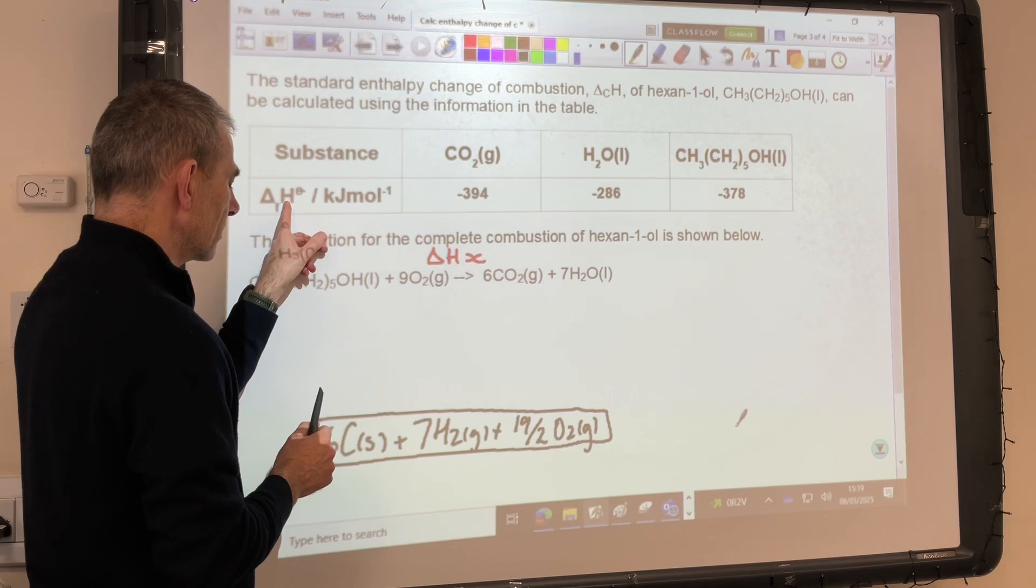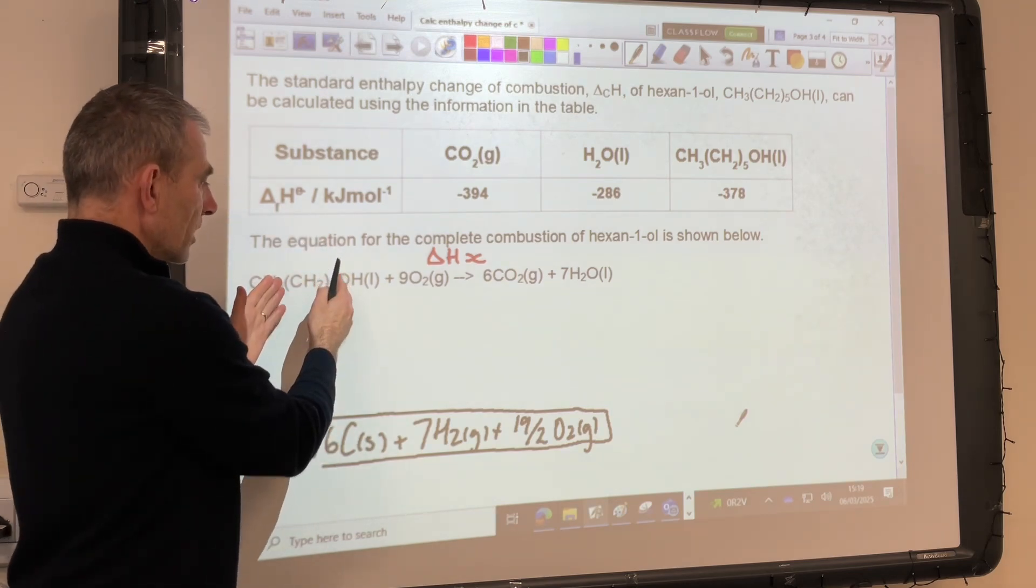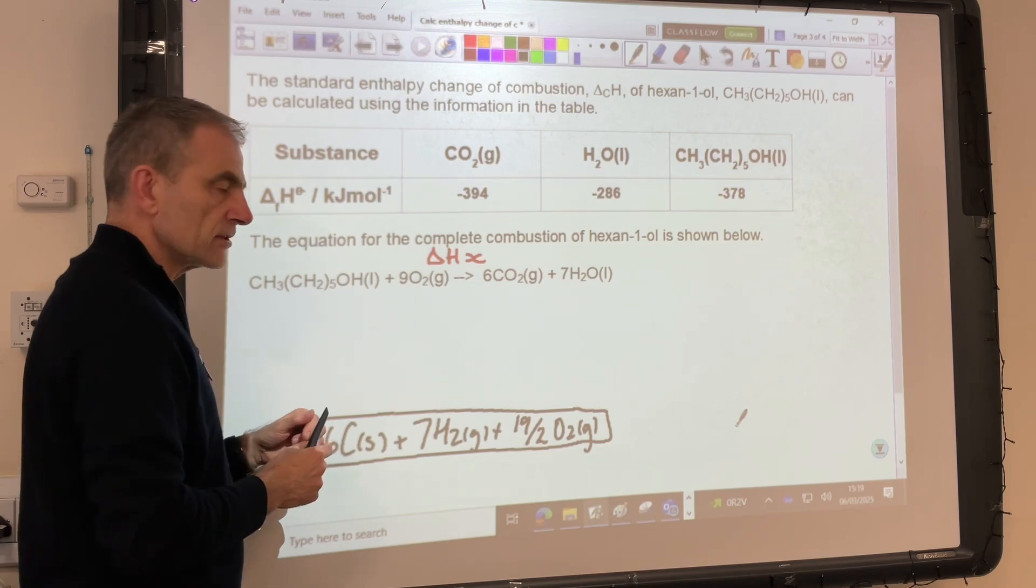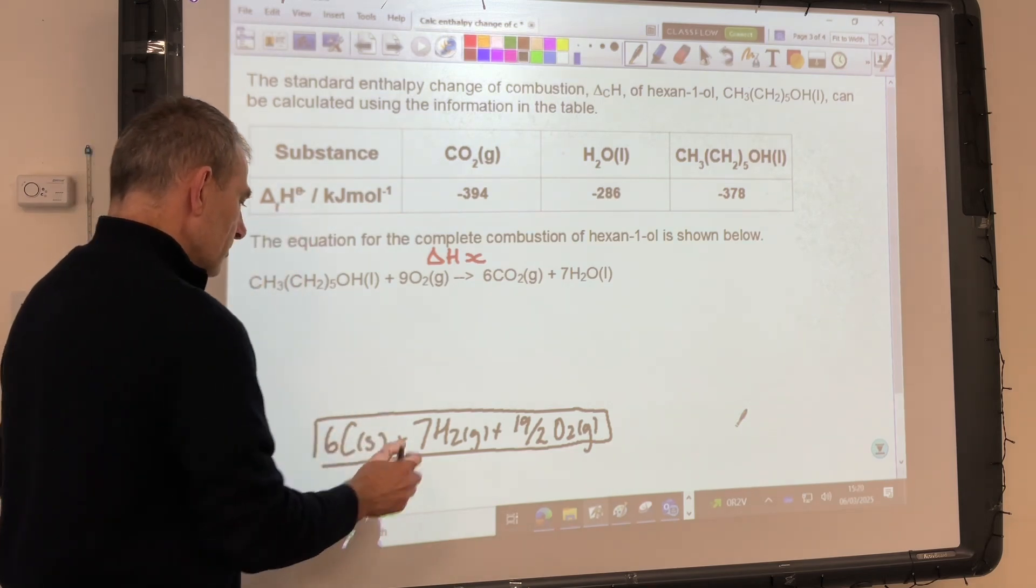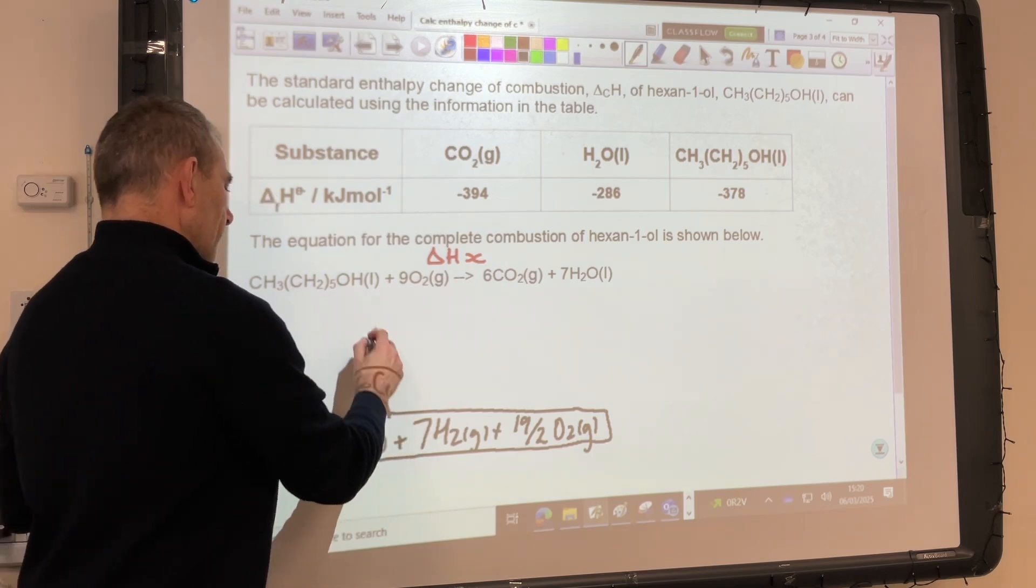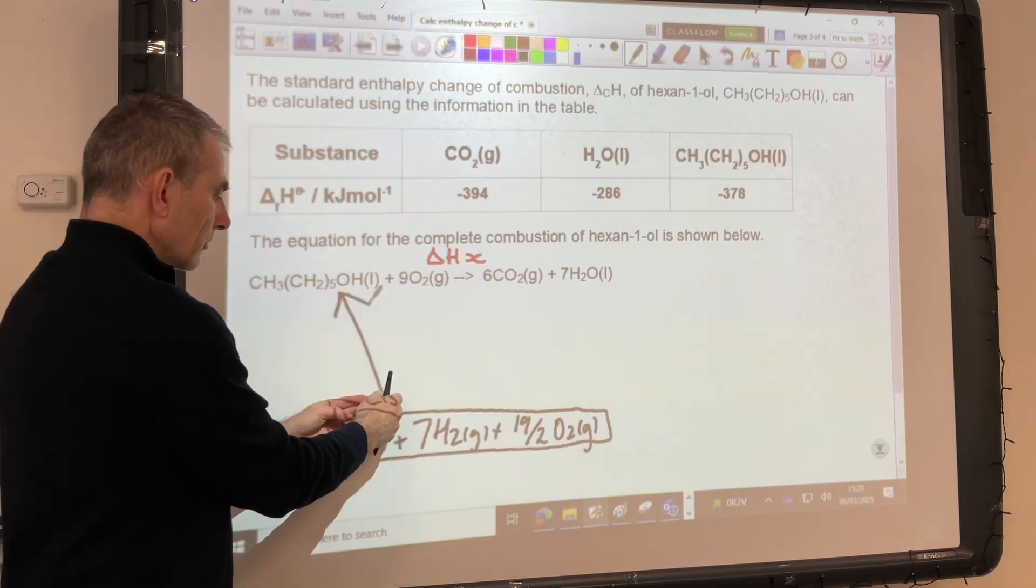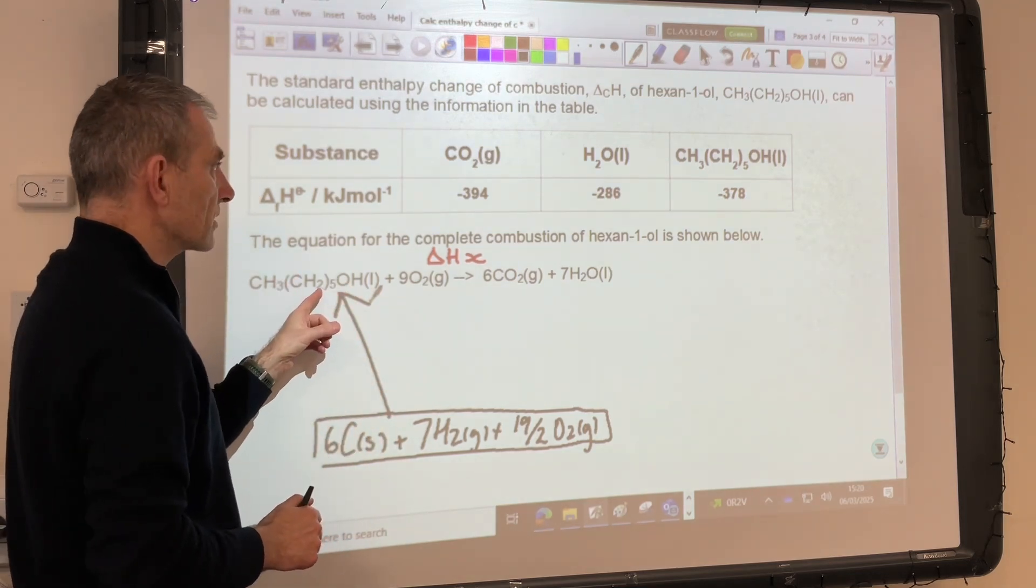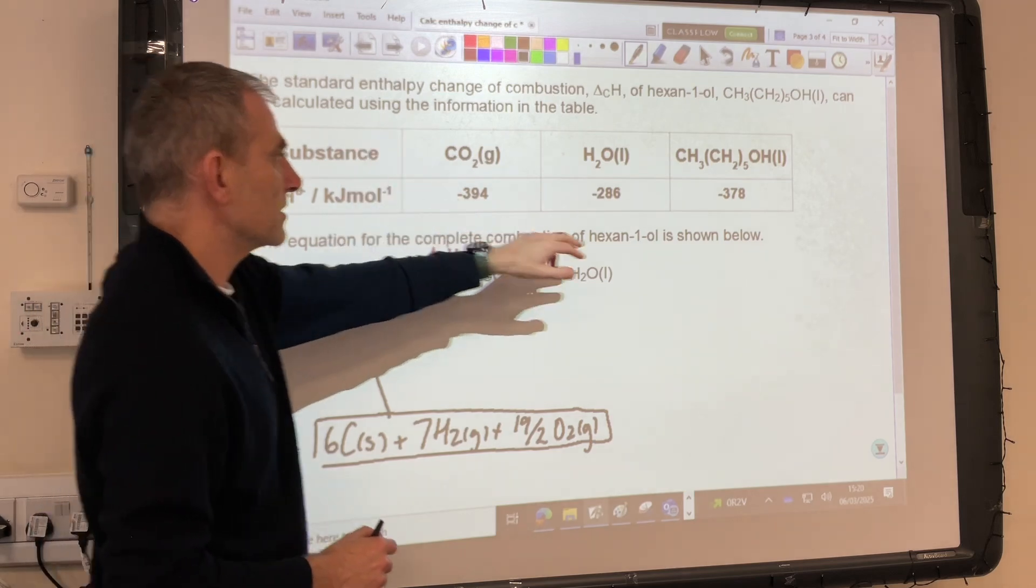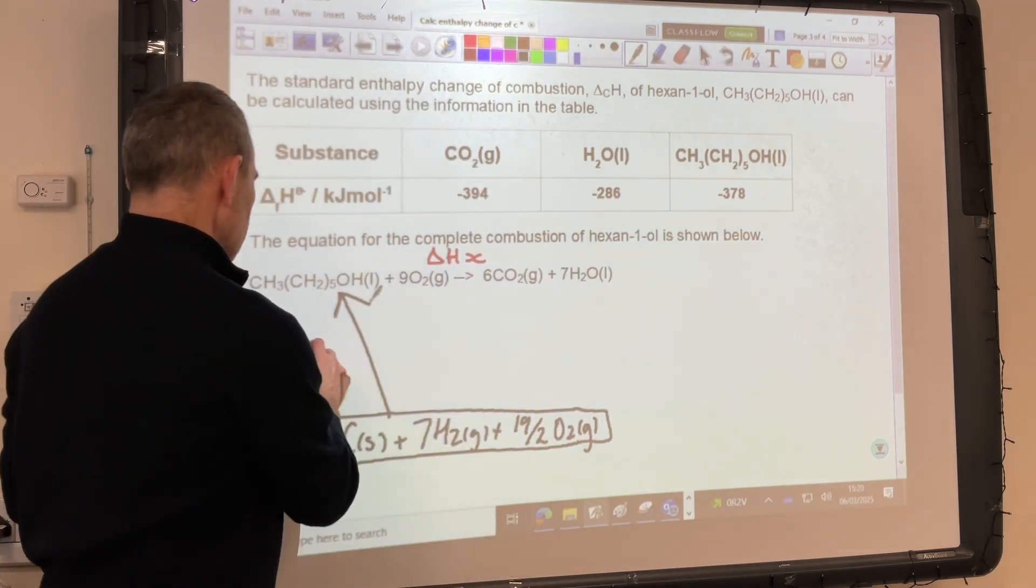Remember, enthalpy change of formation is the enthalpy change when one mole of a substance is formed from its constituent elements under standard conditions. So our arrow is going to go from the elements box up to the substance. So this arrow is going to represent in the cycle the enthalpy change of formation for hexane-1-ol. And we can see from the table the value for that is minus 378 kilojoules per mole.